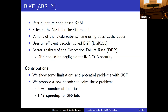Their main contribution is showing some limitations and potential problems with BGF, and proposing a new decoder to solve these problems. This new decoder lowers the number of iterations needed to decode ciphertext for BIKE, achieving a speedup of 1.47x for 256 bits of security. Unlike the other talks, the main contribution here is more theoretical — a new decoder design.